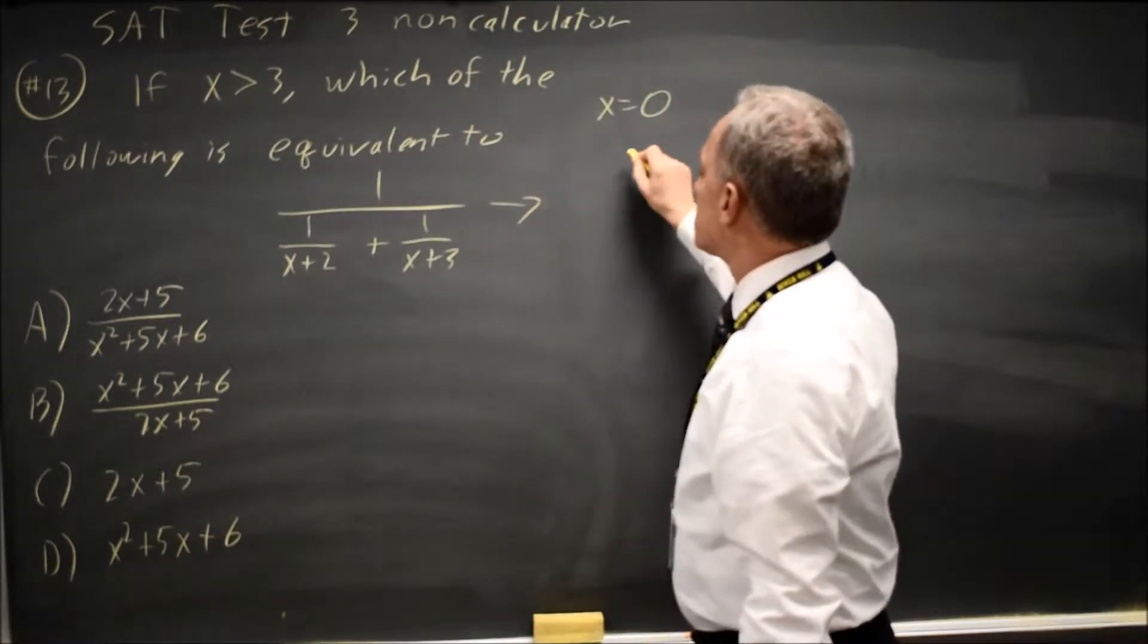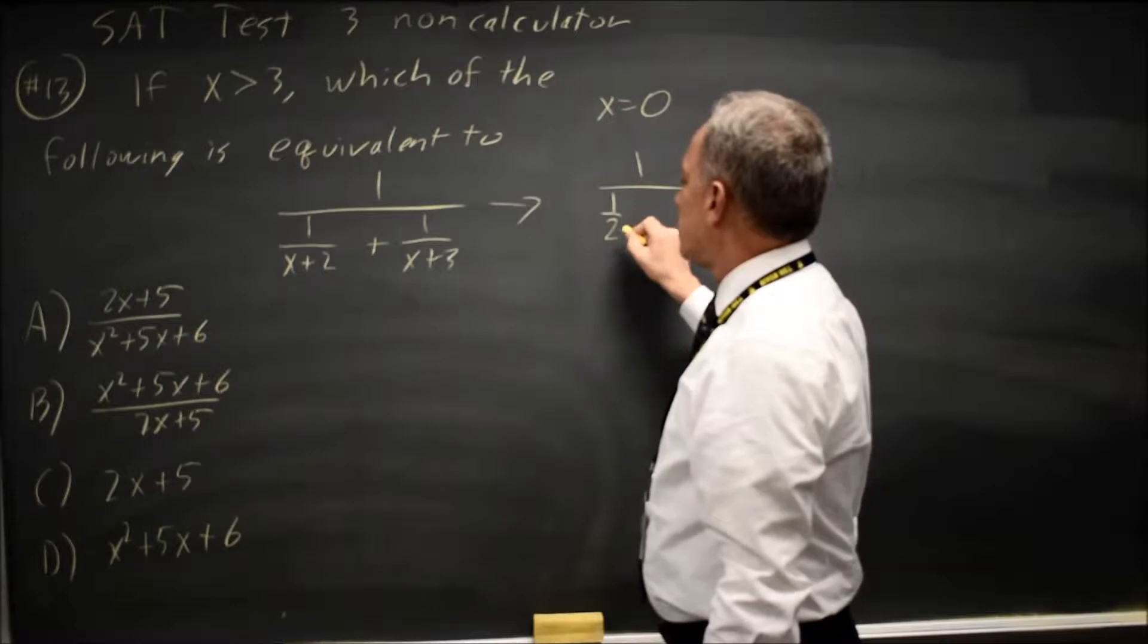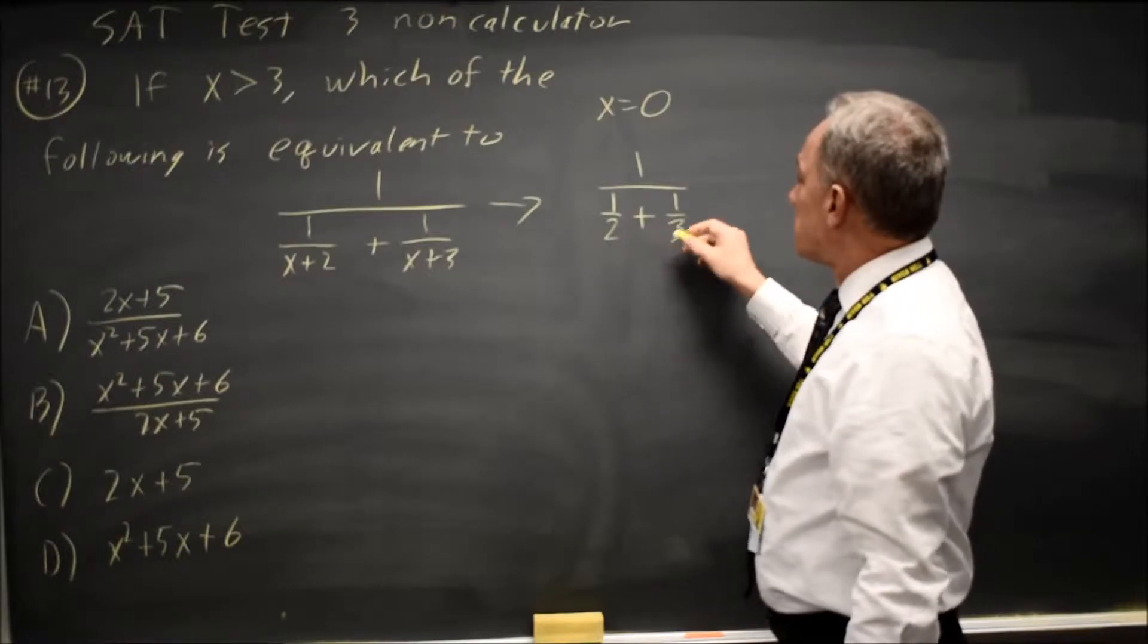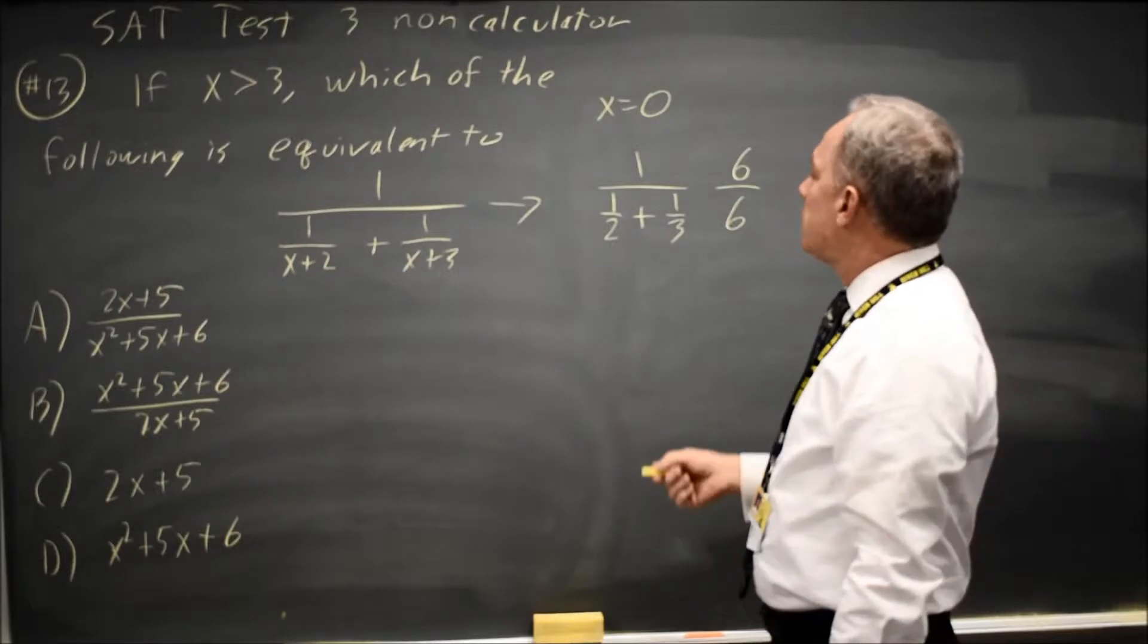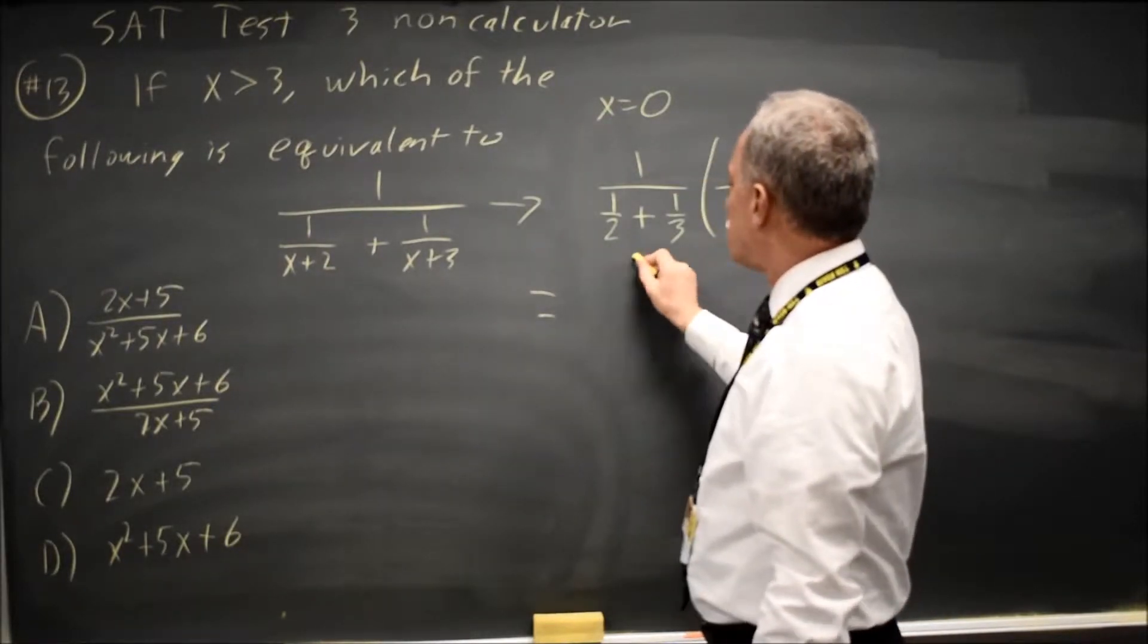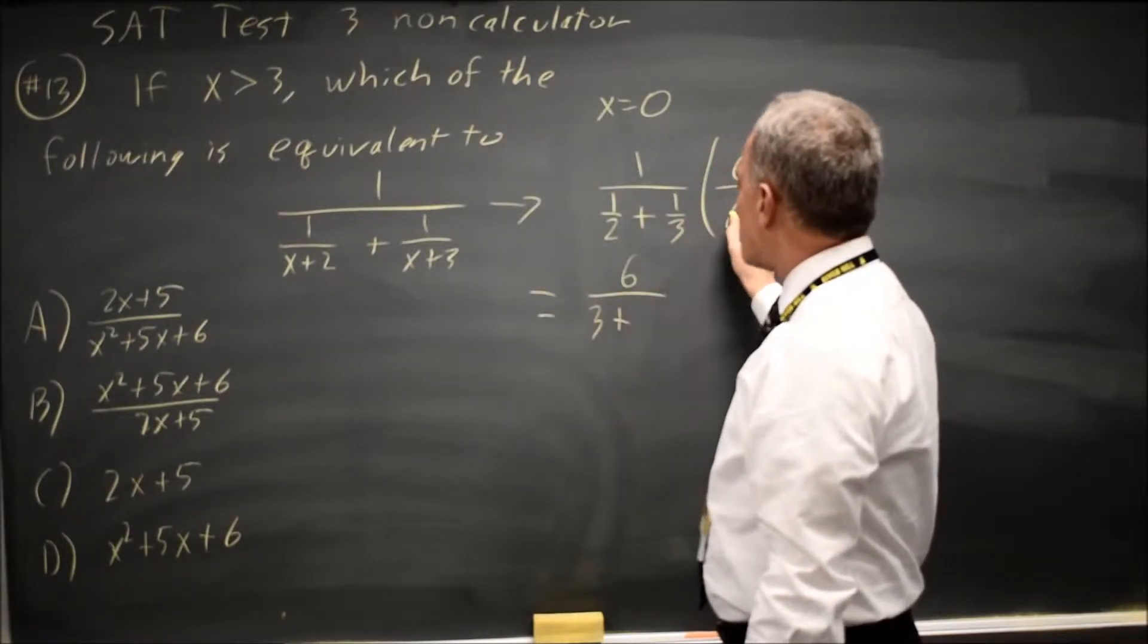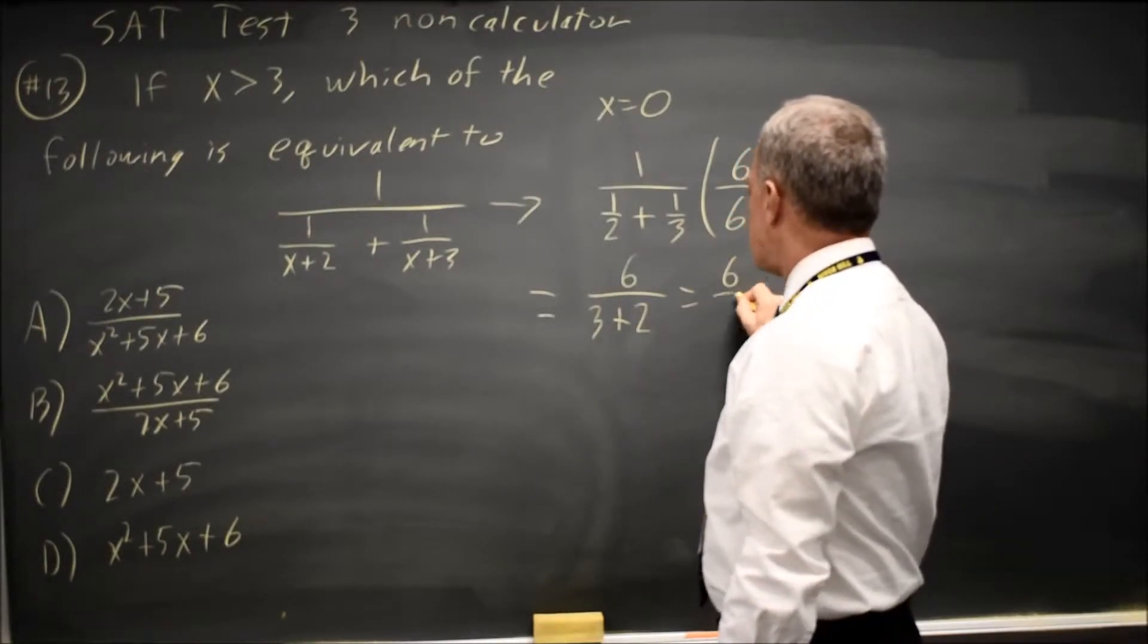So, at x equals 0, this is 1 over 1 half plus 1 third. Least common multiple of 2 and 3 is 6, so let's multiply by 6 over 6, because anything over itself is 1, and when I multiply by 1 in that form, my numerator is 6, my denominator is 1 half times 6, is half of 6 is 3, plus 1 third times 6 is 1 third of 6, is 2, 6 over 5.